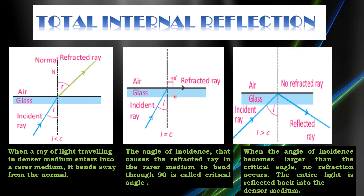When the angle of incidence becomes larger than the critical angle, no refraction will occur. The entire light is reflected back into the denser medium, and this is known as total internal reflection. You can see here that no light ray passes through — the angle of incidence is greater than the critical angle.